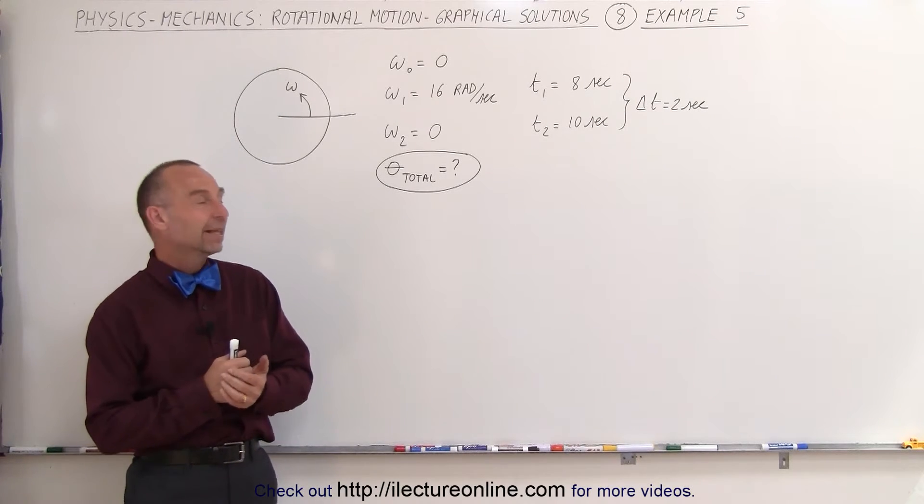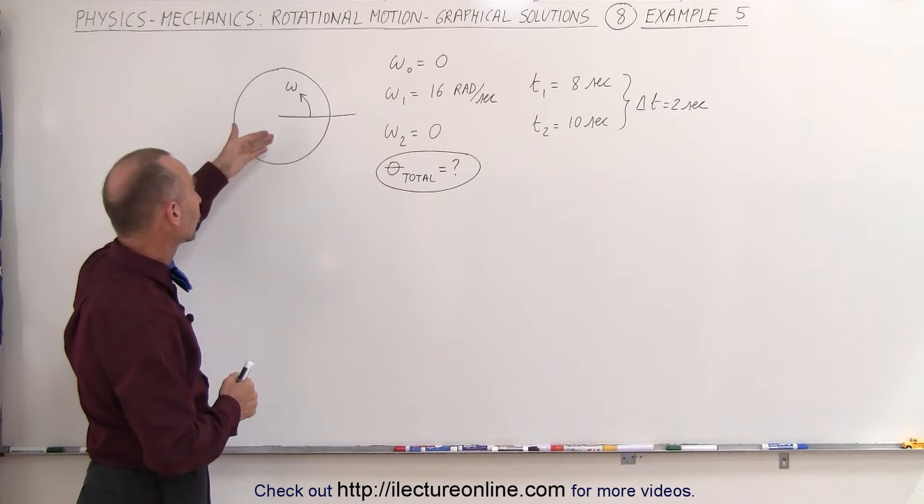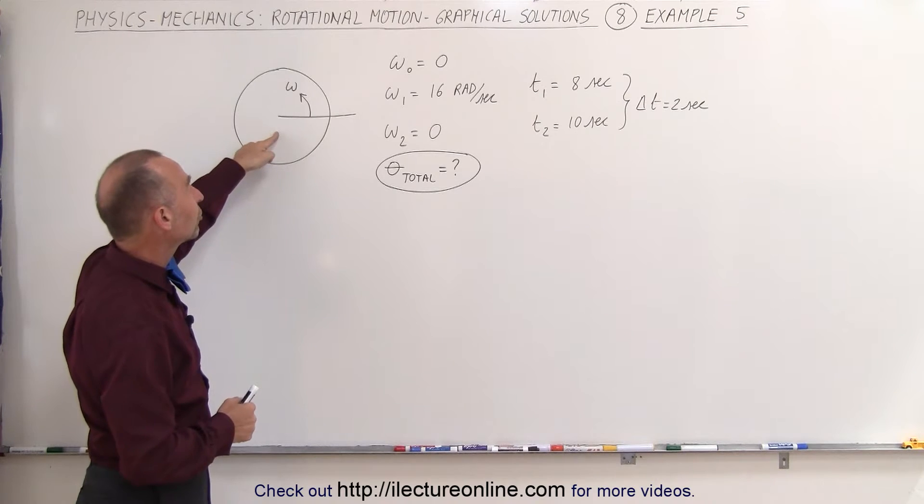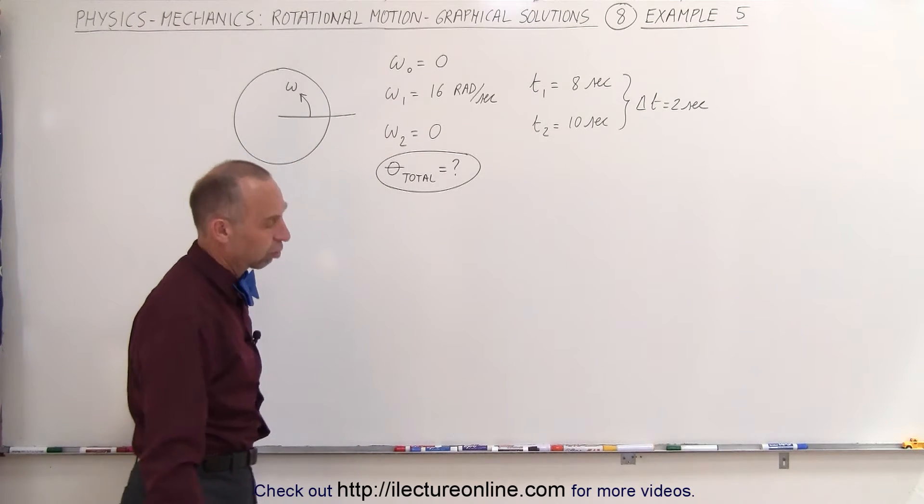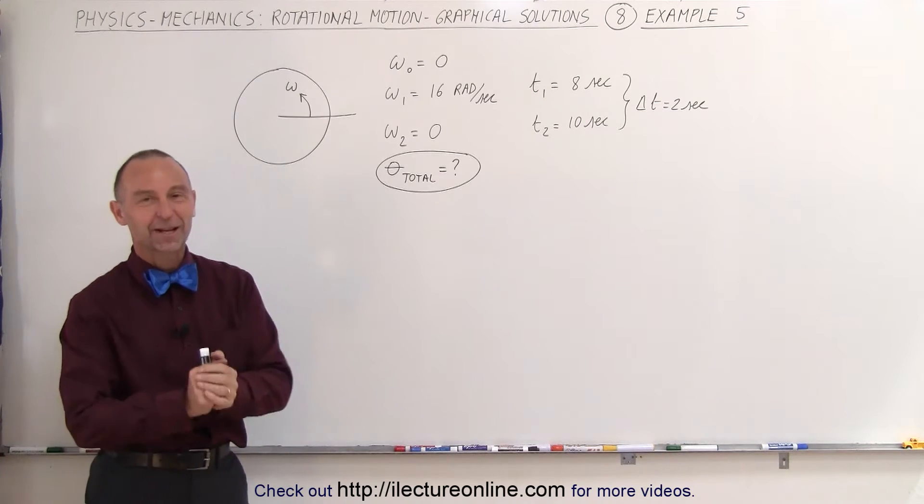Welcome to ElectronLine. In this example we have a circle object that begins rotation. First of all, let's start over again.